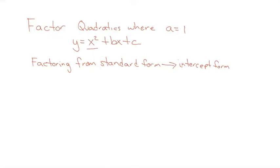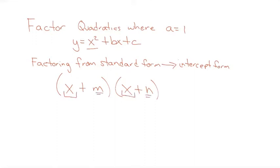The first thing I want to do is review the multiplication of factors to see what we get. I'm going to use x plus m multiplied by x plus n — just generic math where x is the variable and m and n are numbers. I'm going to do the longhand multiplication and then discuss it because it gives us a pattern.